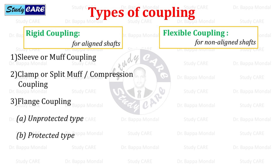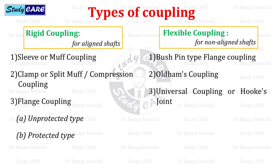Examples of rigid couplings are: 1. Sleeve or muff coupling, 2. Clamp or split muff coupling, also called compression coupling, 3. Flange coupling — with two types: unprotected and protected. Examples of flexible couplings are: 1. Bush pin type flange coupling, 2. Oldham's coupling, 3. Universal coupling or Hooke's joint.